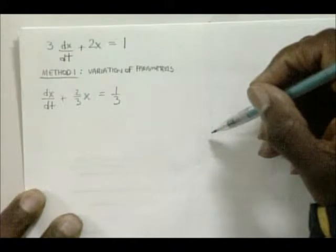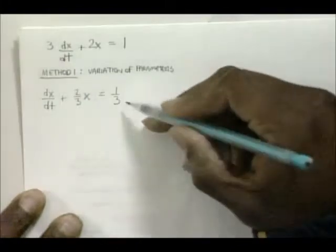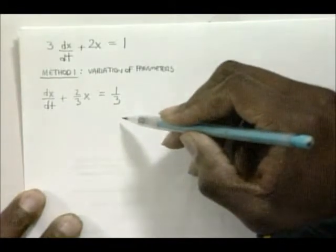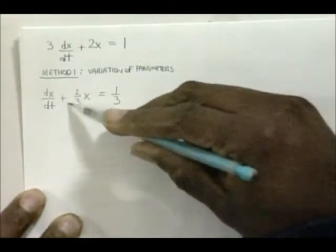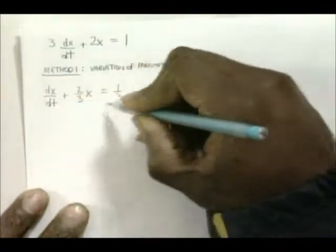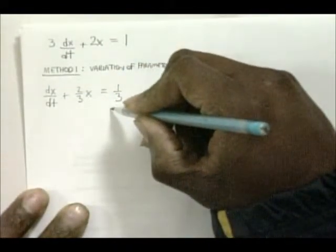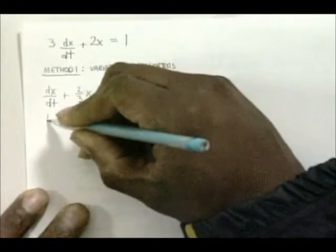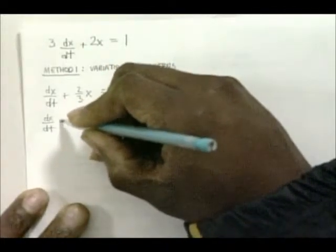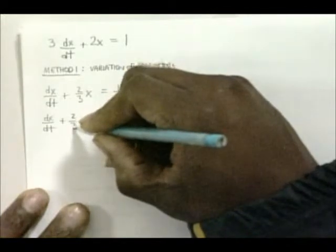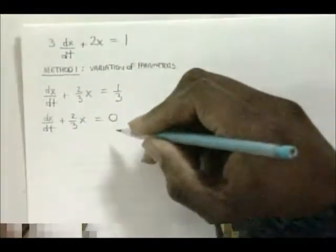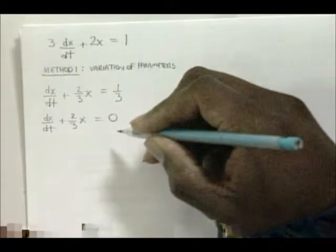Now we want to make this equation homogeneous, meaning the equation is equal to 0. Temporarily, we're going to ignore the 1/3 and make it 0, giving us dx/dt plus 2/3 x is equal to 0.